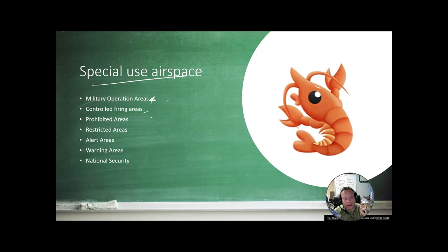So check the NOTAMs and check the controlling agency to see if the MOA is active. Then there are controlled firing areas. These are basically areas that the military might be using to blow stuff up. Technically, they're supposed to stop their activity if they see you flying through them. I would still be careful. There's prohibited areas. These are denoted by a P, something like P-51. It'll tell you, don't fly in here. This area is prohibited. Don't bust prohibited areas. You're going to have a bad day.